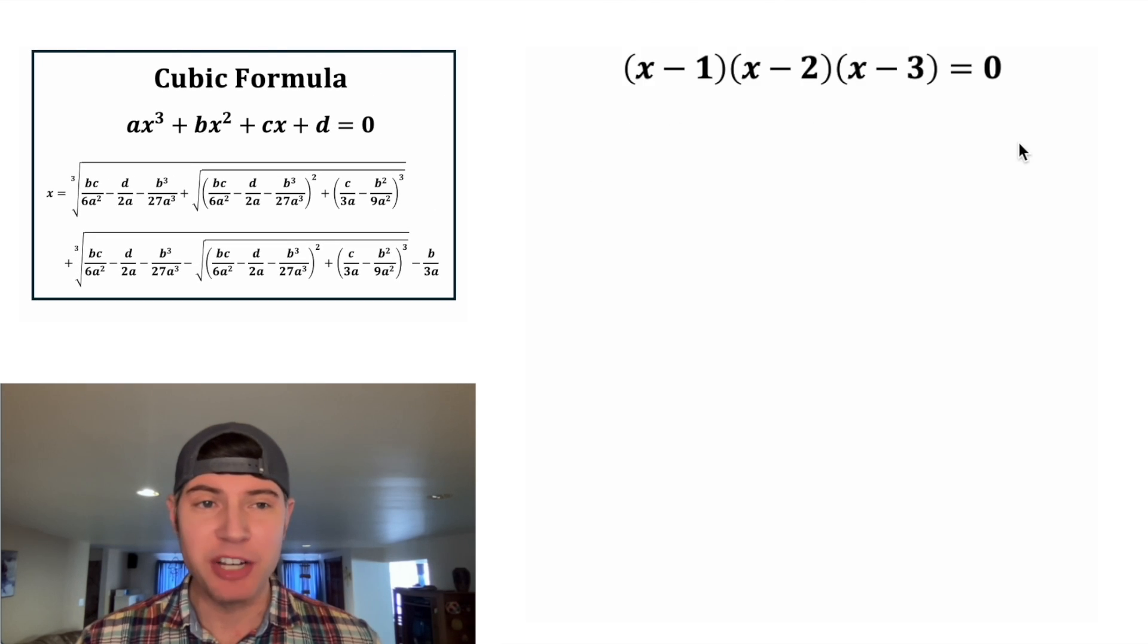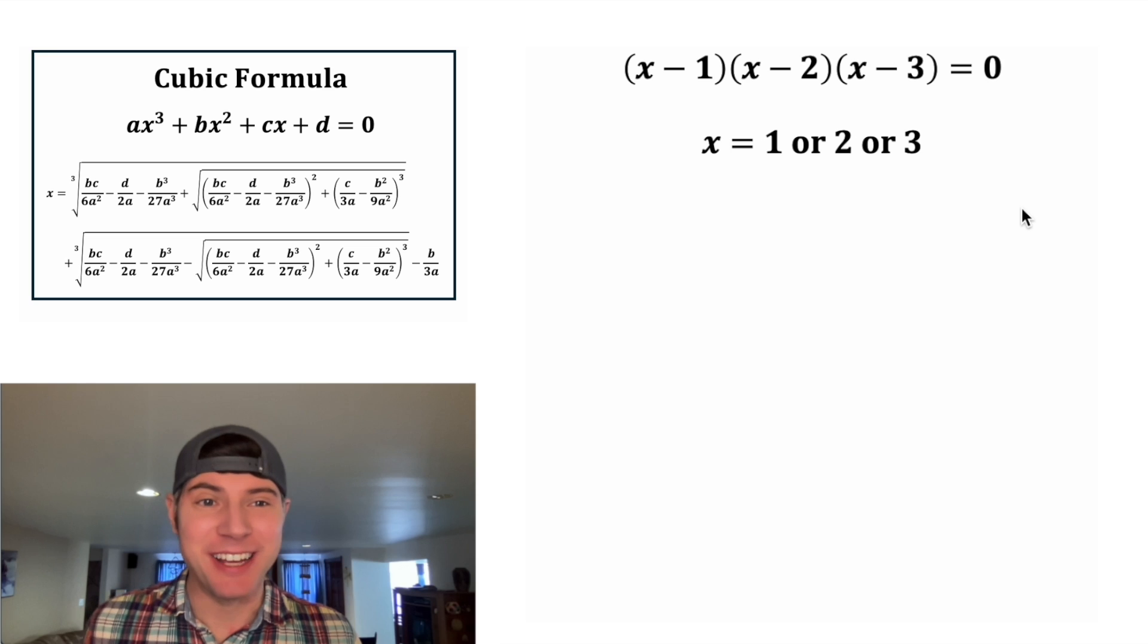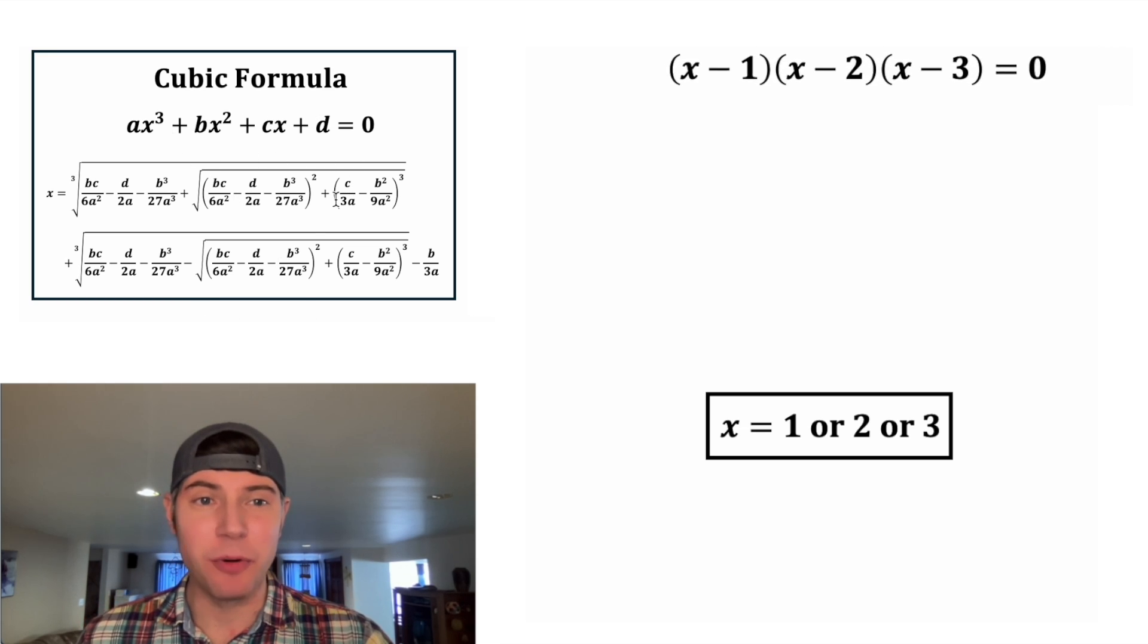So this is a cubic equation all factored out. And this would have the solutions 1, 2, or 3. So if I were to plug this into the cubic formula, which one would it give me? 1, 2, or 3? And I don't know the answer. First, before we can plug it in, we've got to write it in this format.